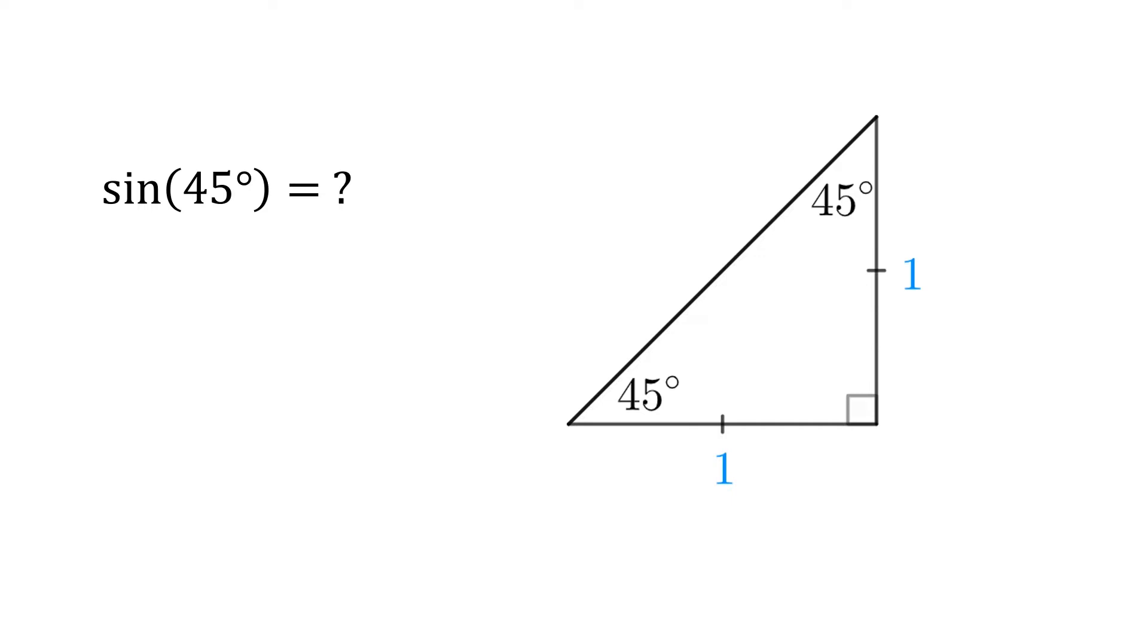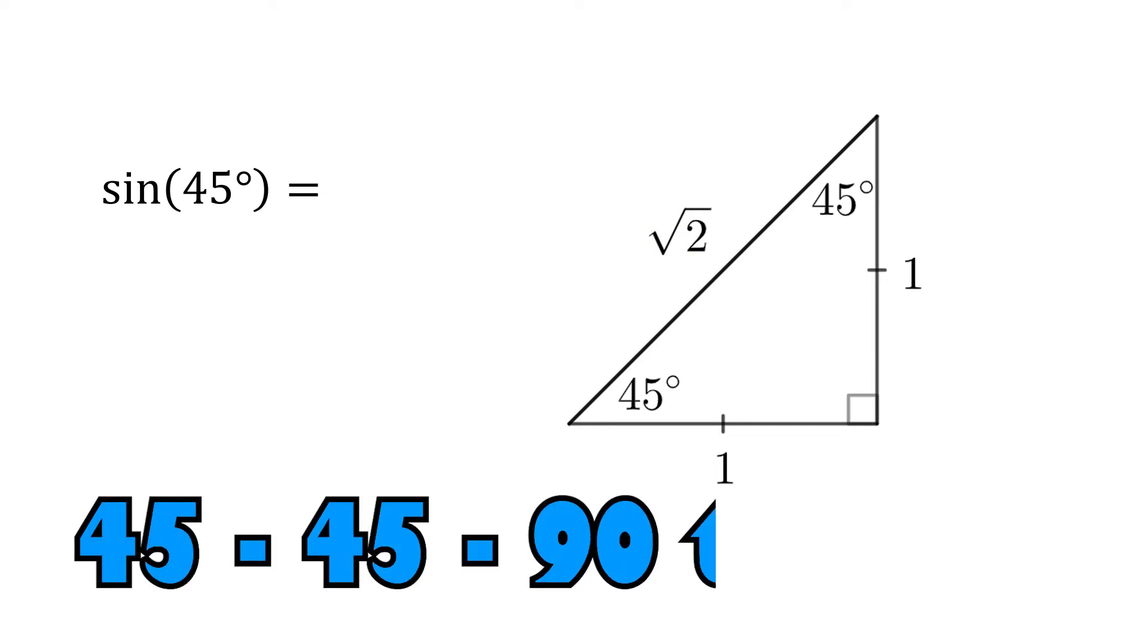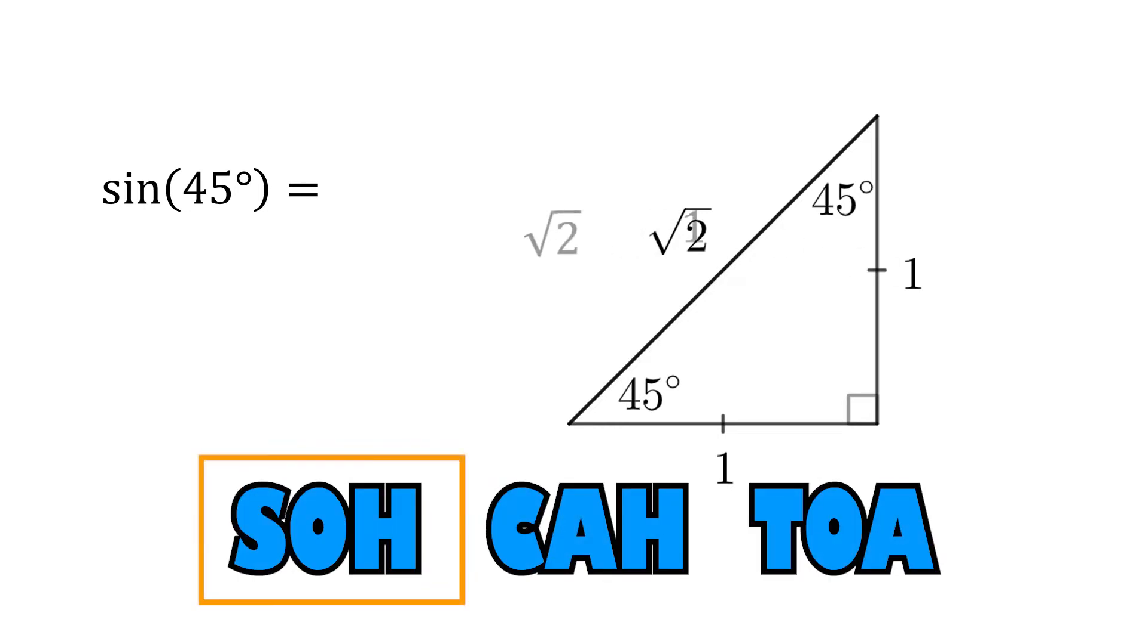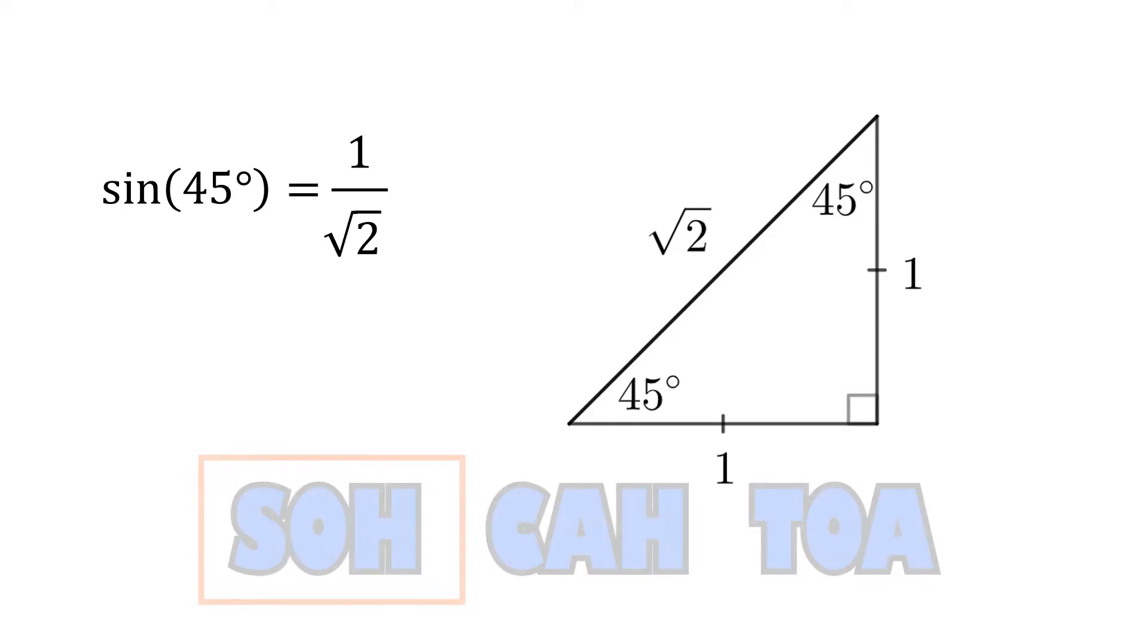When the sides are 1, we can use Pythagorean theorem to find the hypotenuse as square root 2, and that's our 45-45-90 triangle. Using sine equals opposite over hypotenuse, we can easily see that sine 45 is 1 over the square root of 2.